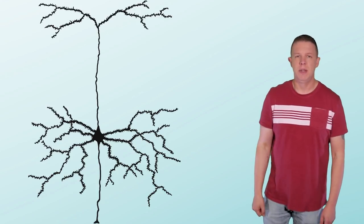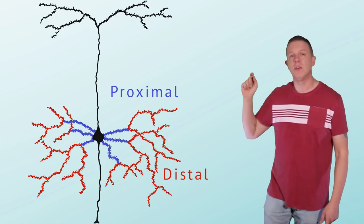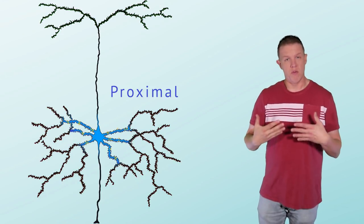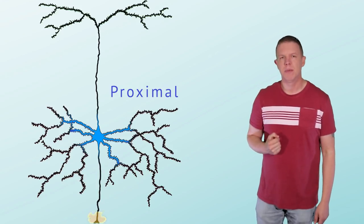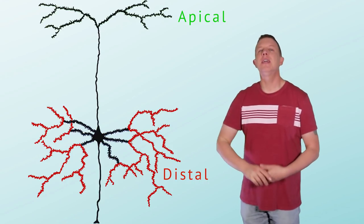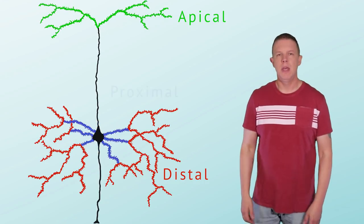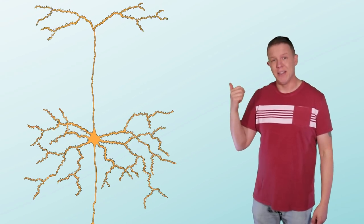If you remember from previous episodes, the HTM neuron has different integration zones that affect how it behaves. There are three zones we currently define in HTM: proximal, distal, and apical. Proximal input is feedforward, or driver input, because it tends to drive cell activations or action potentials. The distal and apical zones are modulatory zones, meaning they can affect how neurons respond to proximal input under different contexts. Based on input received in these three integration zones, the neuron can become active or predictive.